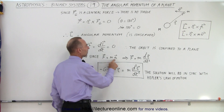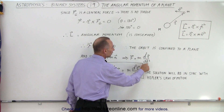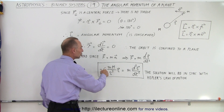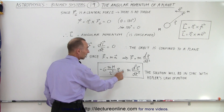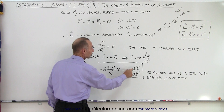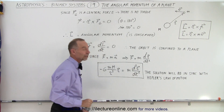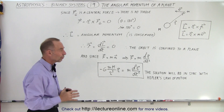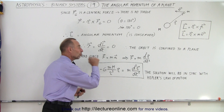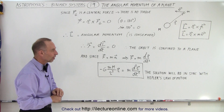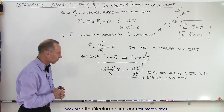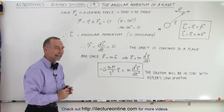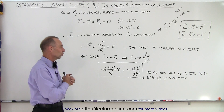Taking Newton's second law, F = ma, and recognizing that acceleration can be written as the second derivative of the position vector, the gravitational equation becomes G·M·m over r³ times the position vector equals mass times the second derivative of the position vector. We are going to look at the solution of that differential equation in various forms, and you will see that the solution to this equation will match Kepler's laws of planetary motion.